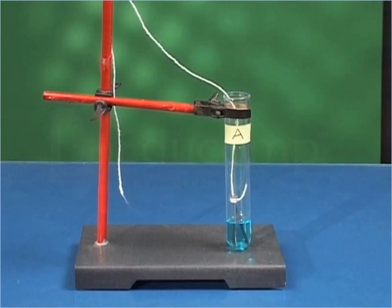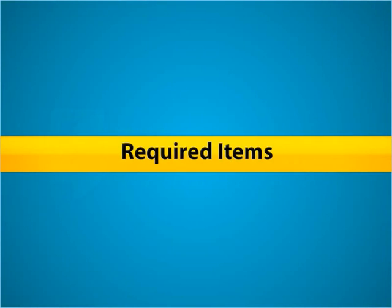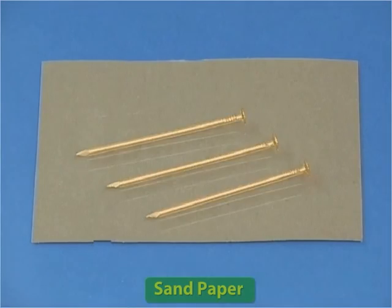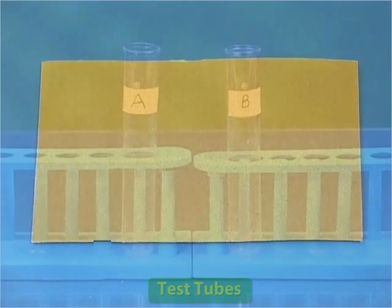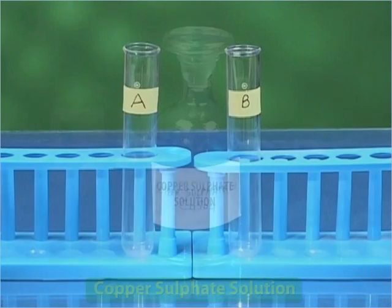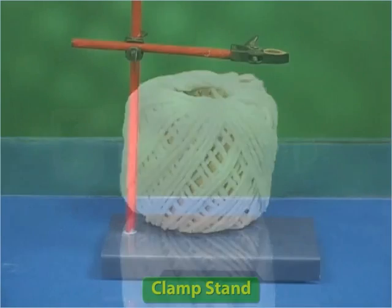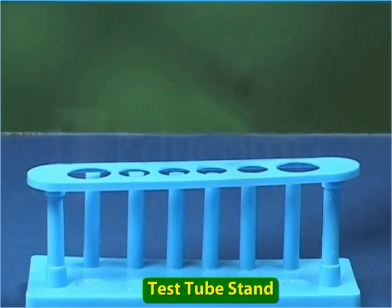Let us perform an activity to find out the details of this color change. For this activity, you will require iron nails, sandpaper, test tubes, copper sulfate solution, thread, clamp stand, and test tube stand.